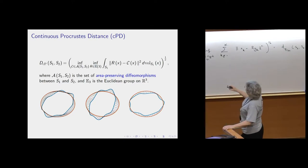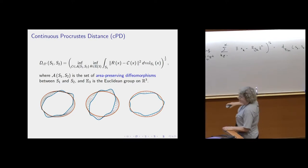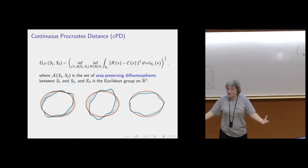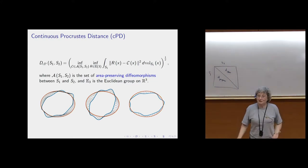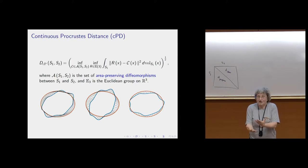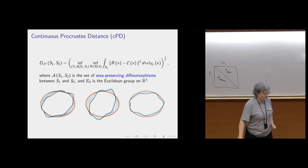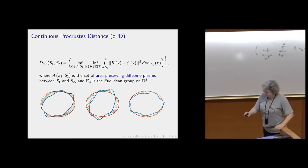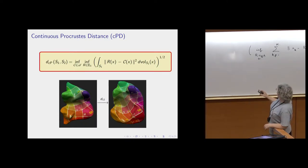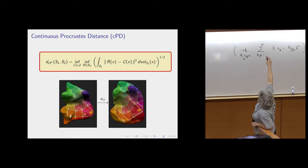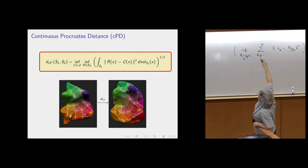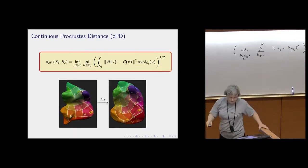Area-preserving is only really relevant when the surfaces are fairly closely related, because if they're not, you can't really expect an area-preserving consistent correspondence — I'll have to come back to that. We showed it for curves but we have this continuous Procrustes distance between surfaces, and you can put a texture on one surface and transport it to the other to see what the mapping is.